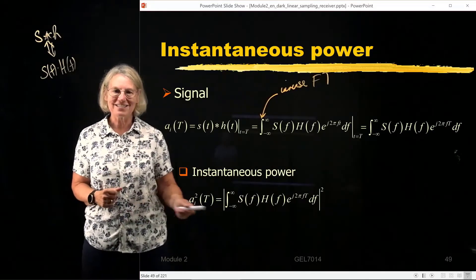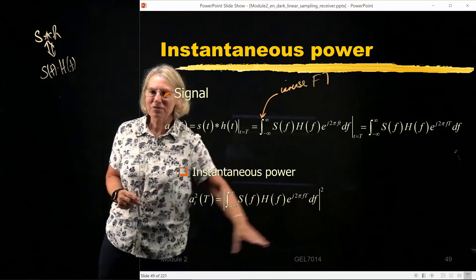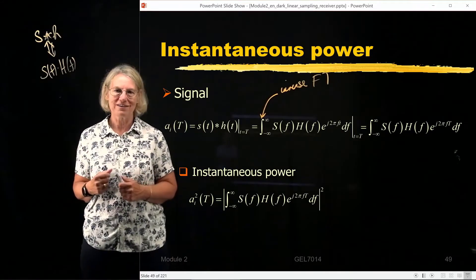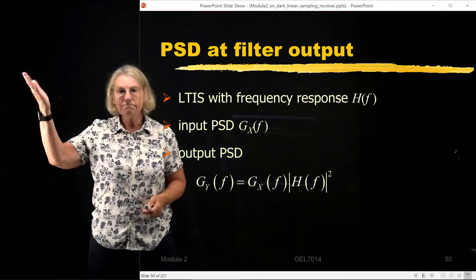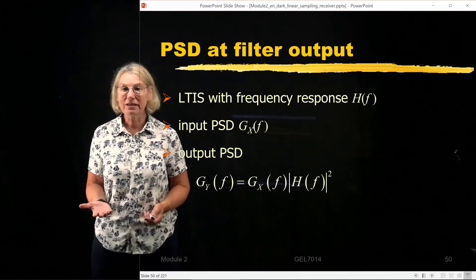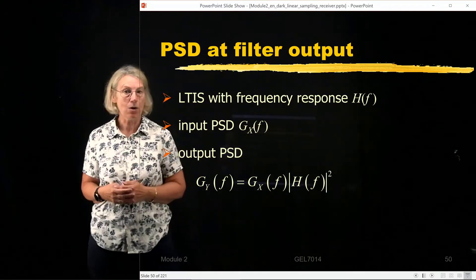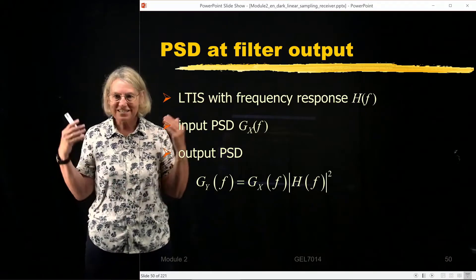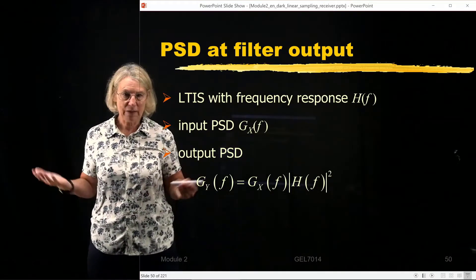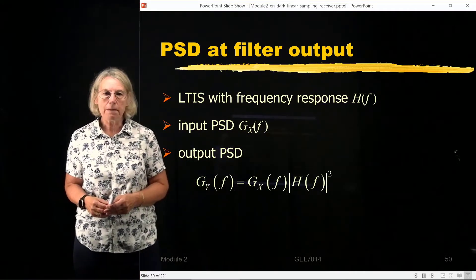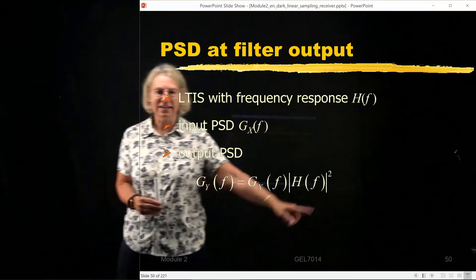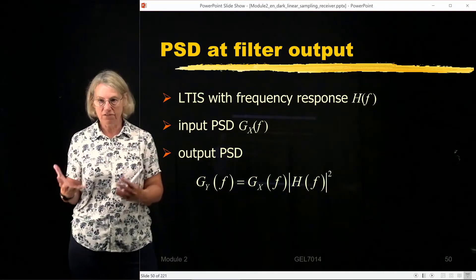We have a trick that lets us exploit this frequency-domain representation to more easily examine how to maximize signal power versus noise power. For the noise, since it's a random process, it's the power spectral density that determines how much power is at the output. For a linear time-invariant system — our linear receiver — with frequency response H of F, the power spectral density at the output is the input PSD multiplied by the modulus squared of the filter.